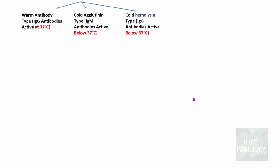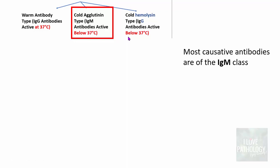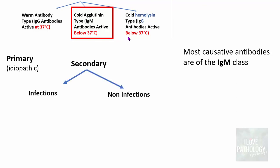One is the cold agglutinin type, typically IgM; the other is the cold hemolysin type, which are IgG. Both are active below 37°C. The causative antibodies in cold agglutinin type are IgM class. They can be primary or secondary. Secondary infectious causes include mycoplasma, infectious mononucleosis, mumps, and malaria — remember all M's.